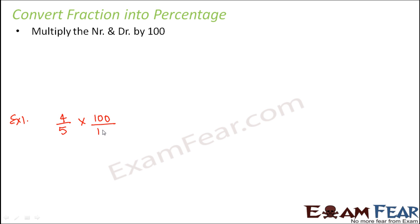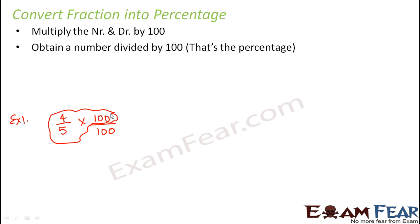That is your step number one. Second is obtain a number divided by 100, that's the percentage, because percentage is all about how much out of 100. So now you have a hundred in the denominator, so leave that hundred. Other than that, everything else is like one number, that is 4 into 100 by 5, this entire thing divided by 100. So that is how you need to visualize it. So basically now you can write this in terms of percentage. What you do is replace divided by 100 with the percentage symbol.